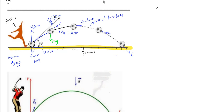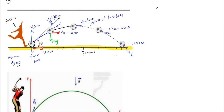The horizontal component of velocity remains the same everywhere — it will be u cosθ at every point. So v3x = u cosθ, and finally u cosθ again. Look at the horizontal component of velocity: it remains the same throughout.